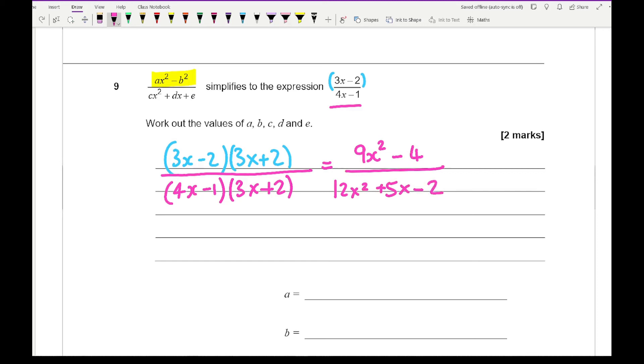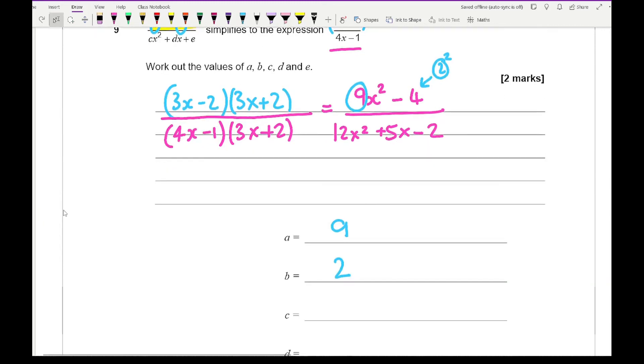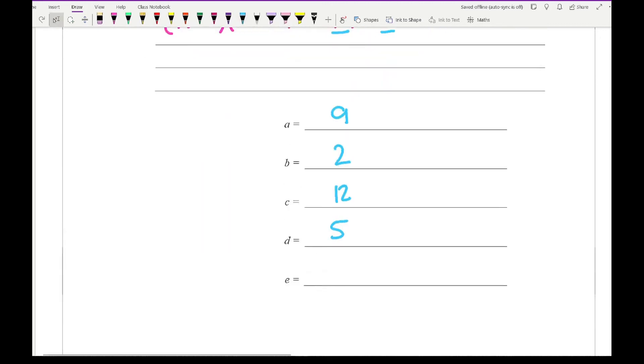All I've then got to do is compare the coefficients. 4 can also be written as 2 squared. Therefore A is the coefficient of X squared on the numerator, which is 9. B is the constant, which is 2, not 4. C is the coefficient of X squared, which is 12. D is the coefficient of X, which is 5. And E is the constant, which is minus 2.